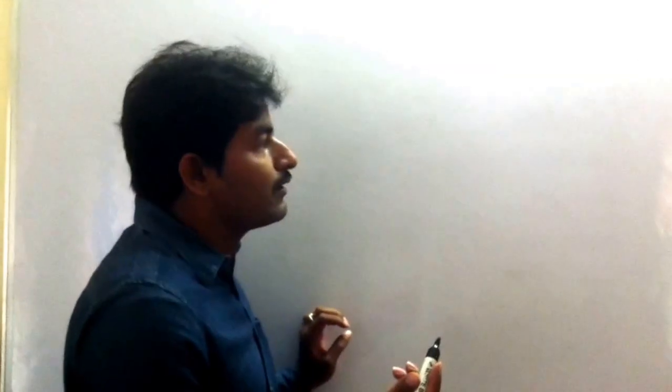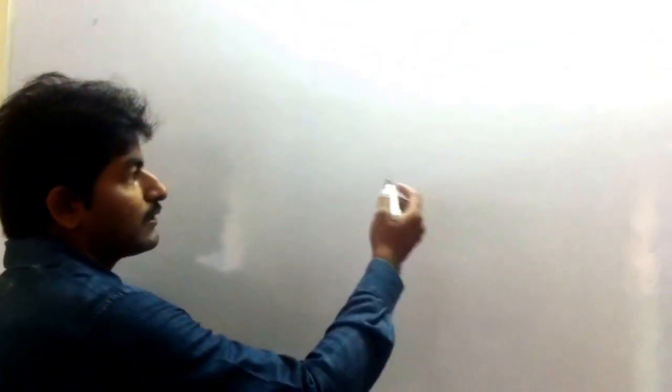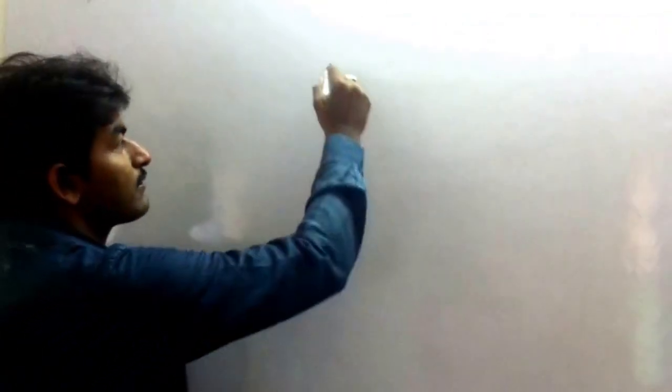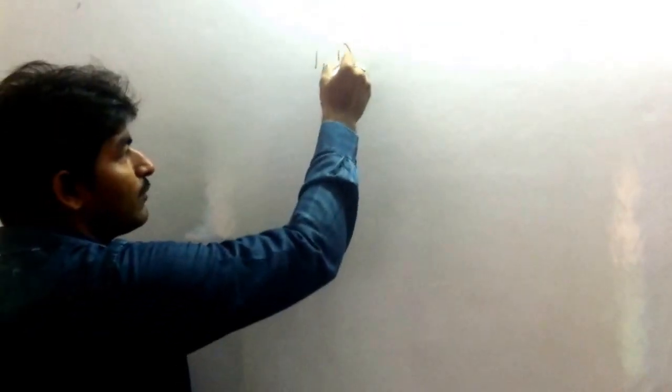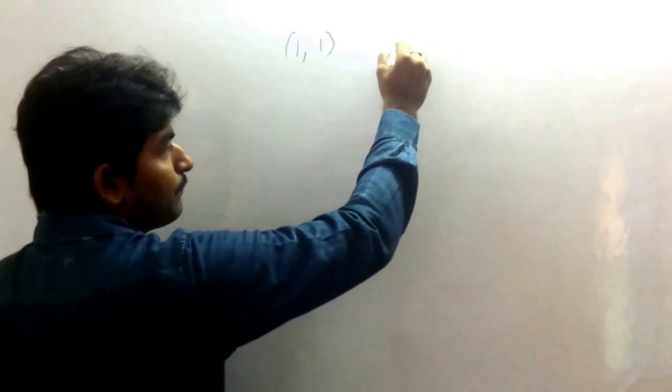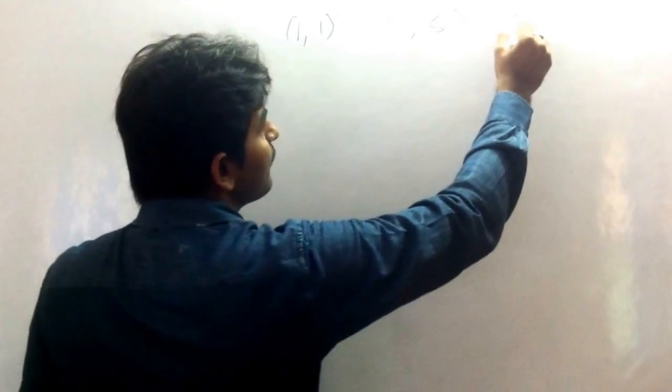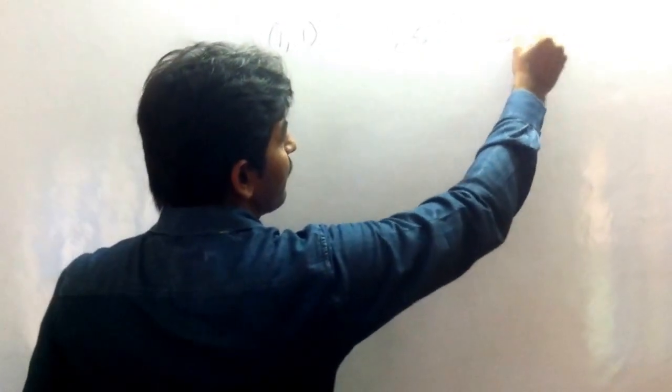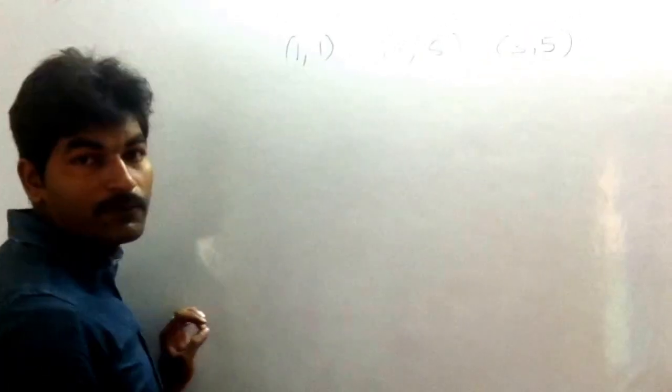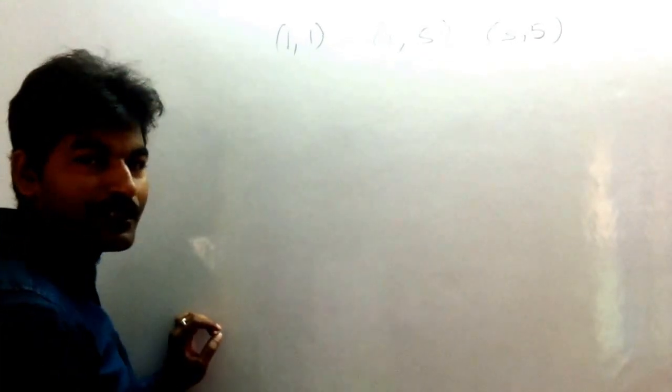Thanks for looking. Now we are going to discuss a shortcut method for finding the area of a triangle. Let us consider three different vertices. For example, suppose (1,1), (1,5), and (3,5). These are the three vertices of a triangle.